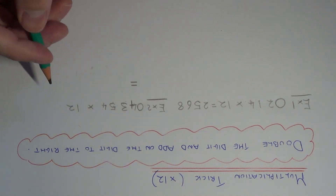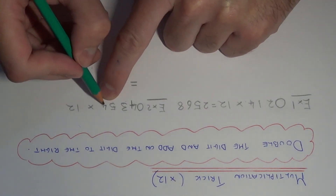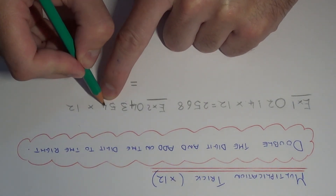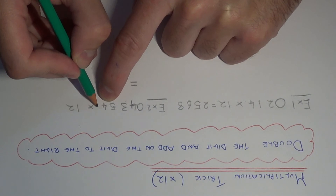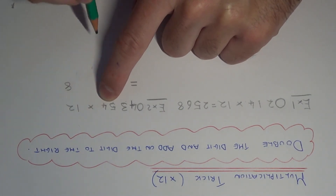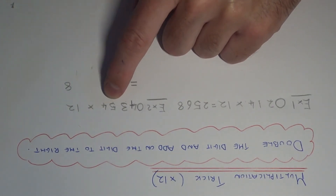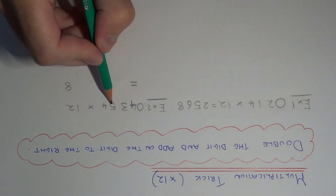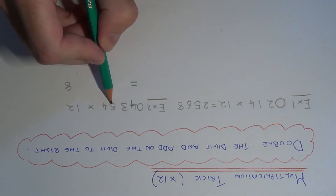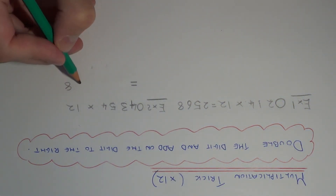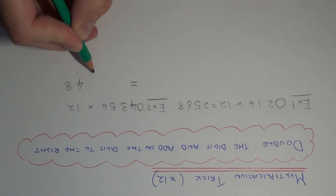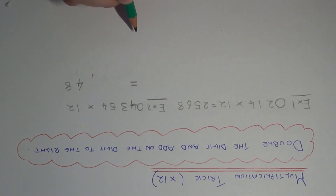Double the digit at the end, which is 4, gives 8. There's no digit to the right of it, so the first part of our answer is 8. Moving to the next digit: double the 5 is 10, add on the digit to the right — 10 add 4 is 14. We put the 4 here and carry the 1 into the next column.